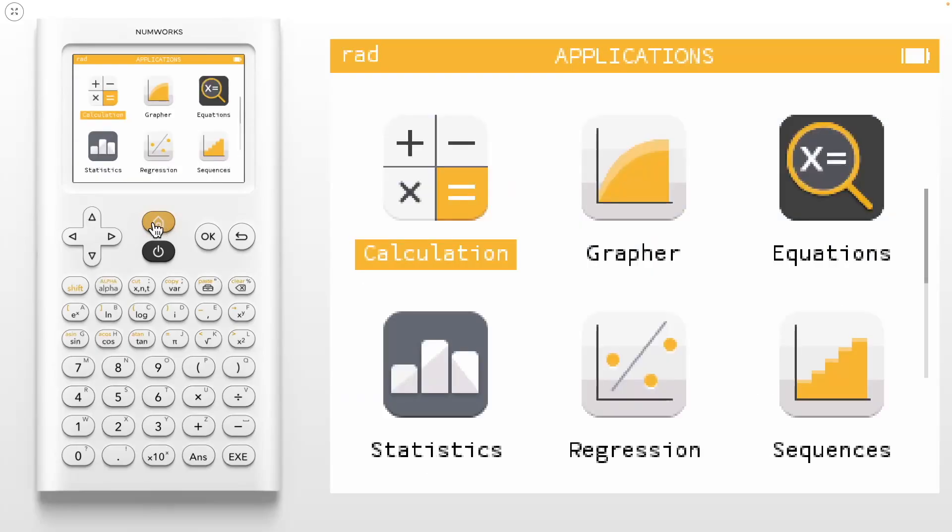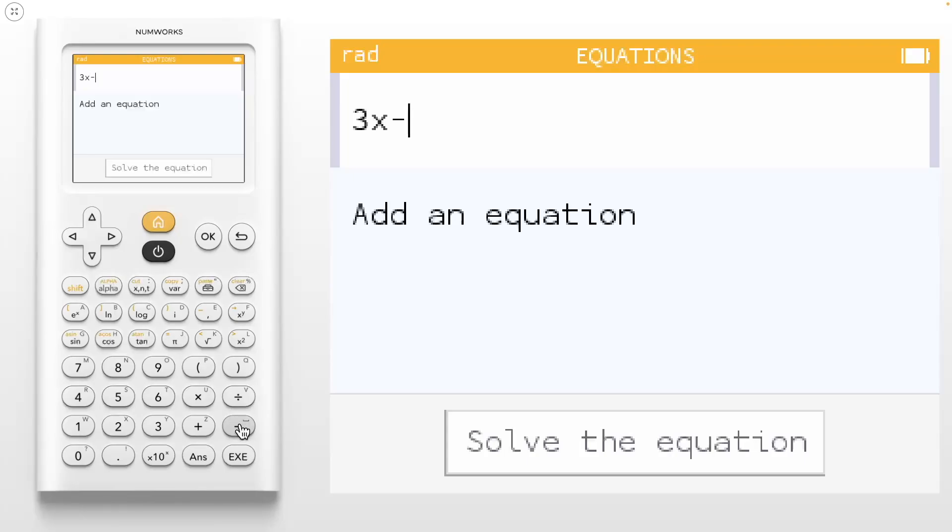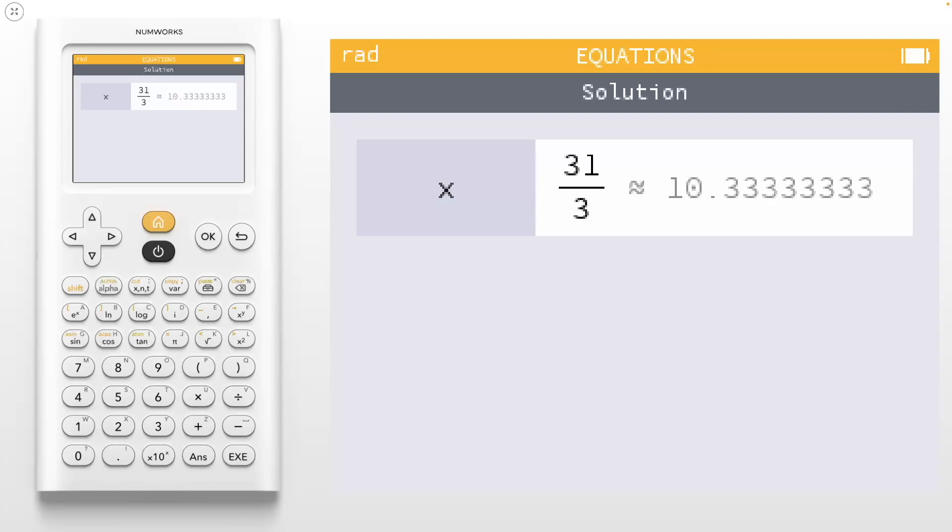Now let's head over to the equation application. With the equation app, you can solve equations. Within the equations app, you can use our keys to start typing an equation right away. Let's solve the equation 3x minus 8 equals 23. To input this, type 3, and then you can use the xnt key for x minus 8, and then we'll use shift pi for the equals 2, 3. To solve the equation, navigate down to solve the equation. We see our solution as an exact fraction and decimal approximation.